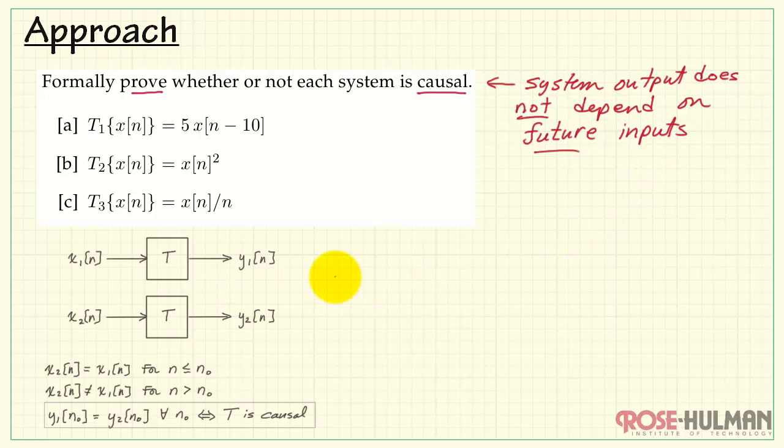Here's a general proof structure that we can use. Let's imagine the same system T is subject to two different inputs, x1 and x2, to produce two different outputs, y1 and y2.